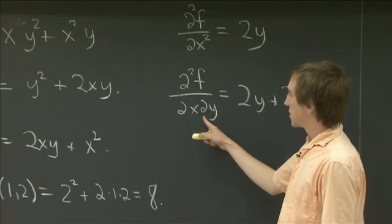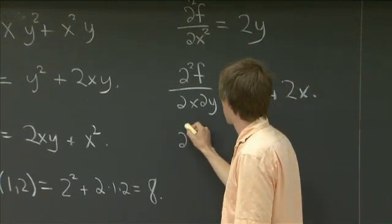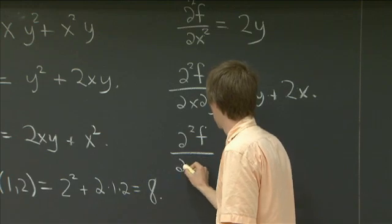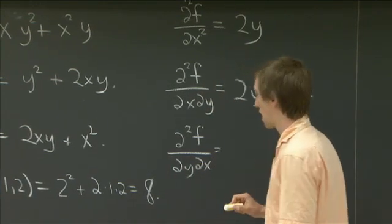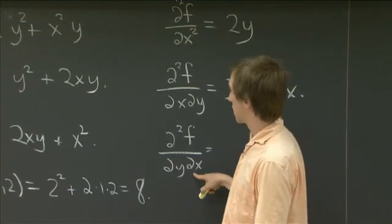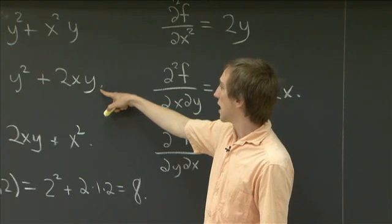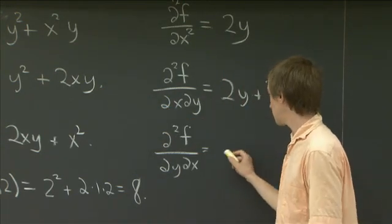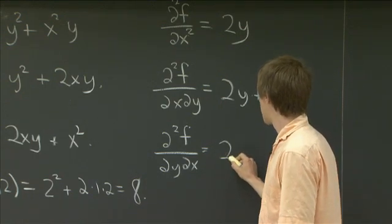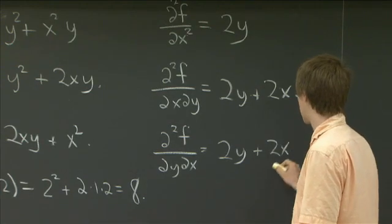Now, let's see what happens if we switch the order here, and we take instead the partial derivative in the opposite order. So now, let's go back to our partial derivative of f in the x direction. And let's take its derivative now in the y direction. So the first term there, y², gives us a 2y. And the second term gives us a 2x.